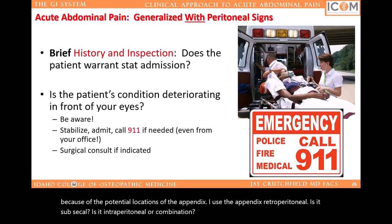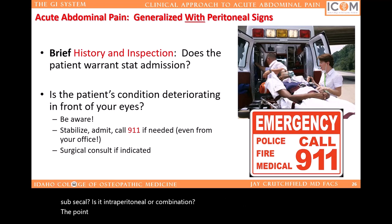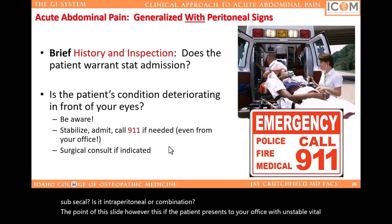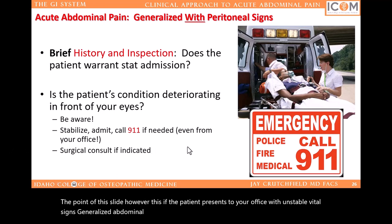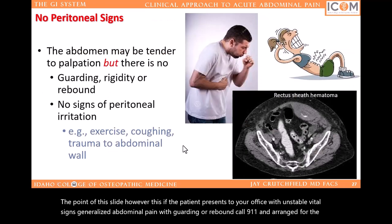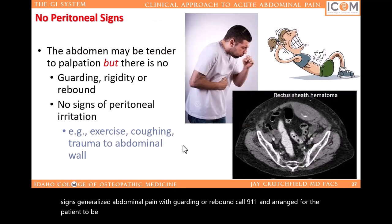The point of this slide is this: if a patient presents to your office with unstable vital signs, generalized abdominal pain with guarding or rebound, call 911 and arrange for the patient to be sent to the hospital immediately.